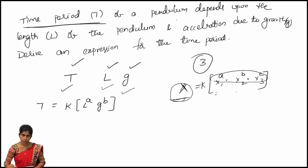A and B are arbitrary constants we need to find by comparing the powers of fundamental quantities on both sides. The fundamental formula for each term: for time T, the fundamental quantity is T itself. For length L, it is a fundamental quantity, so L power A. For G, acceleration due to gravity, the fundamental quantities are L T power minus 2, because units are meter per second squared, so L T power minus 2, whole power B.